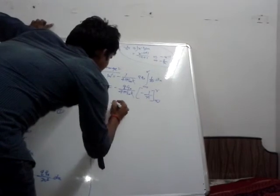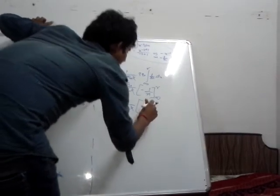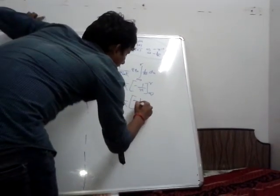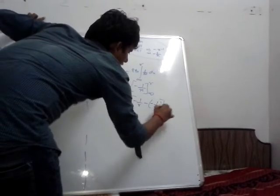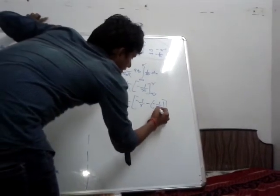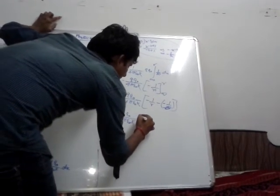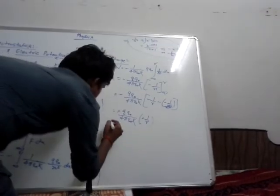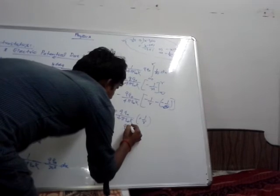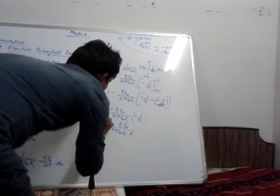Substituting the limit: with the upper limit R we get minus 1 by R, and the lower limit gives 1 by infinity. The value of 1 by infinity is going to be 0, so we substitute 0. The equation becomes QQ0 divided by 4 pi epsilon naught K, times minus 1 by R. Minus and minus will become plus. So W will be equal to Q Q0 divided by 4 pi epsilon naught K into R.